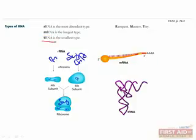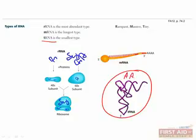Transfer RNA, or tRNA, are the molecules that bind to amino acids at one end and a codon at the other, and they play an important role in protein synthesis, which we'll talk about in a minute.